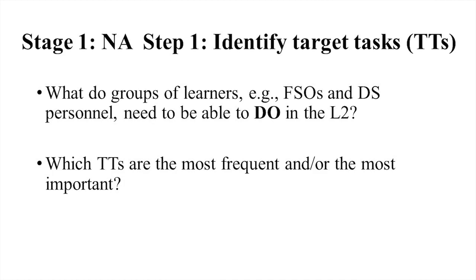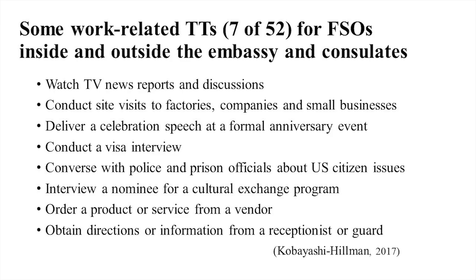A PhD student at Maryland, Kyoko Kobayashi-Hillman, did a database study of American diplomats in Japan and identified 52 target tasks for them. A handful of examples from the 52: watching TV news reports in Japanese; conducting site visits to factories, companies, and small businesses; delivering a celebration speech at a formal anniversary event; conducting a visa interview; conversing with police and prison officials about US citizen issues; interviewing a nominee for a cultural exchange program; and ordering a product or service from a vendor, obtaining directions, et cetera.